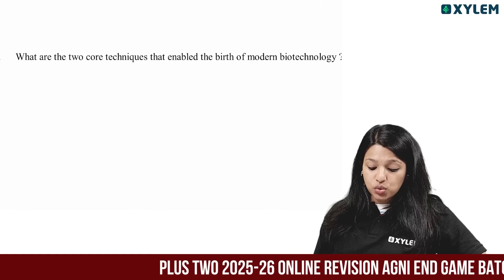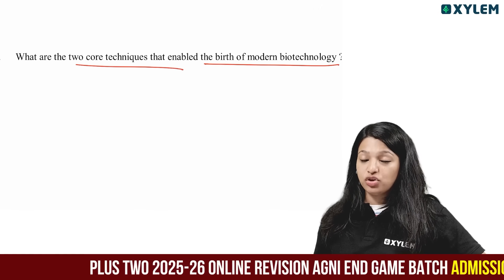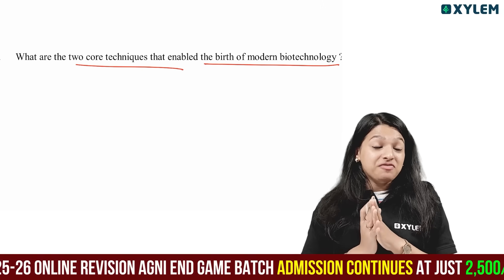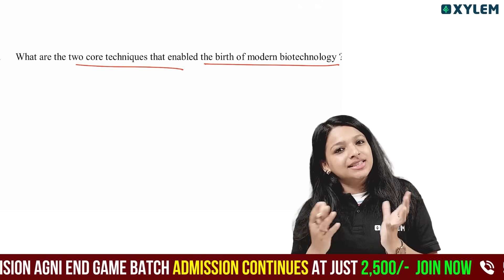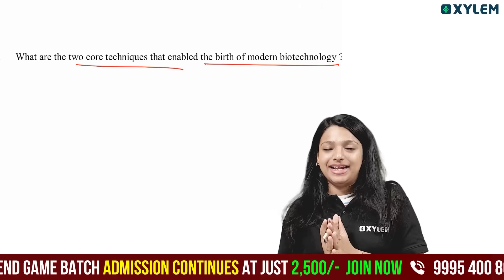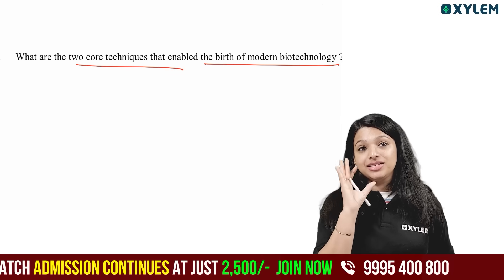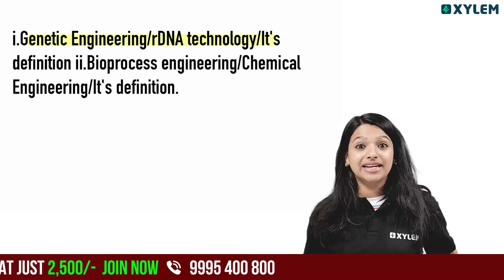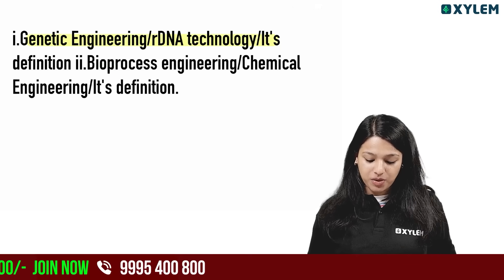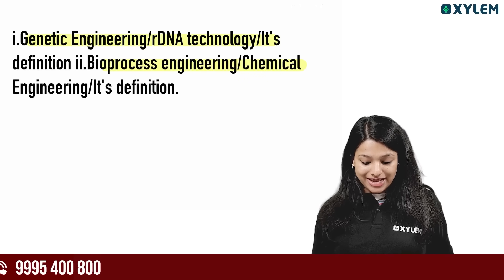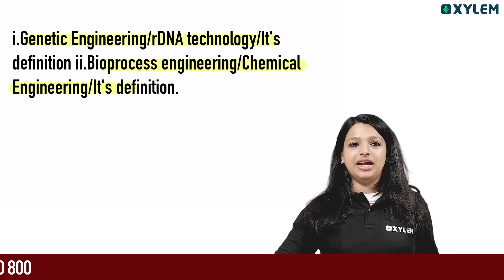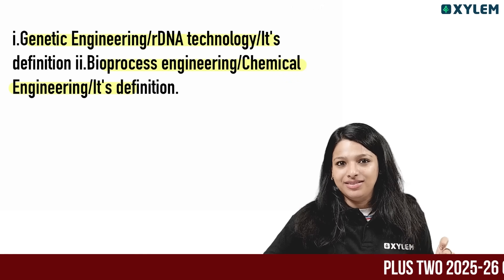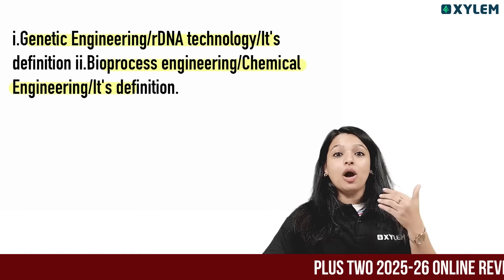What are the two core techniques that enabled the birth of modern biotechnology? In biotechnology principles and processes, two core techniques enable modern biotechnology. One is genetic engineering — our DNA technology. The second is bioprocess engineering, which is chemical engineering. Genetic engineering is the recombinant DNA technology.